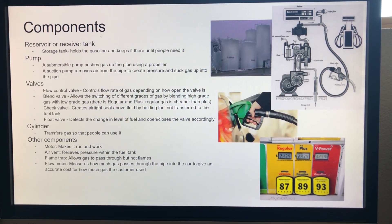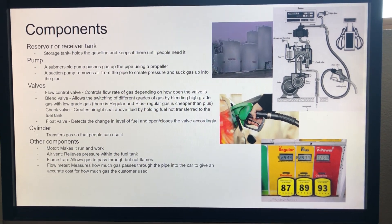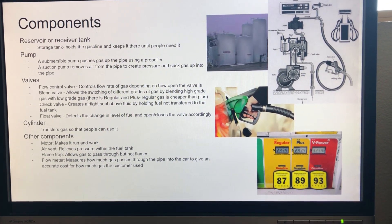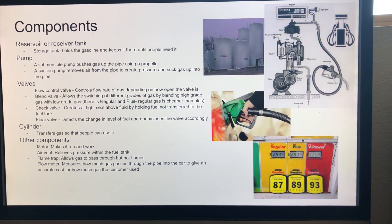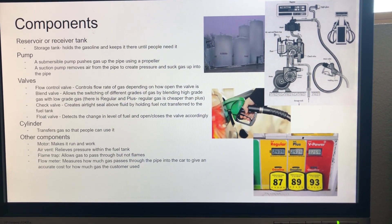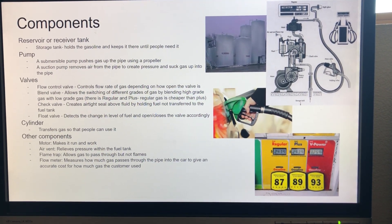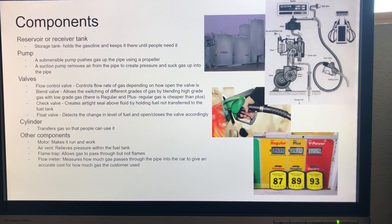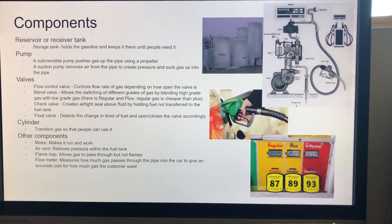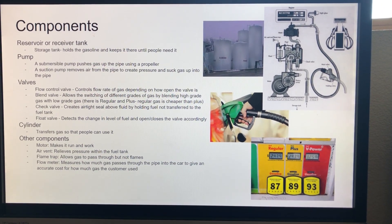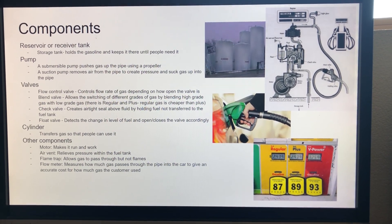Gas pumps use two different types of pumps: a submersible pump, which is located inside of the liquid and pushes the gas up using a propeller, and a suction pump, which is positioned above the liquid and uses pressure to suck up the gas into the pipe.